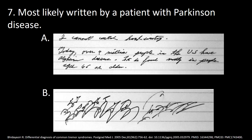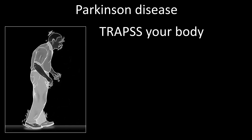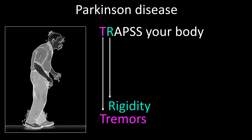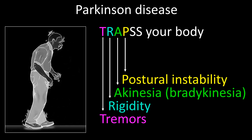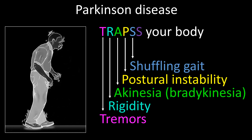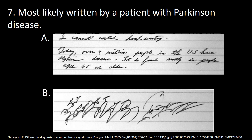The motor manifestations of Parkinson's disease can be memorized by remembering that Parkinson's disease traps your body — TRAPS: T for tremor, R for rigidity, A for akinesia or bradykinesia, P for postural instability, the first S for shuffling gait, and the second S for small handwriting. The answer to this question is A.